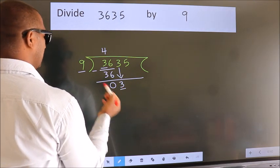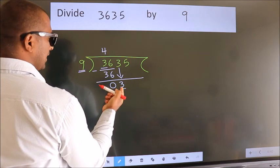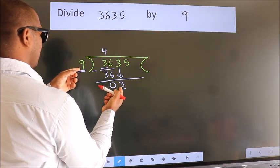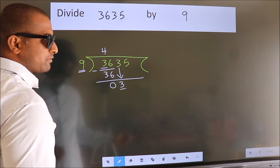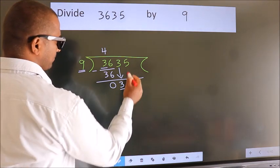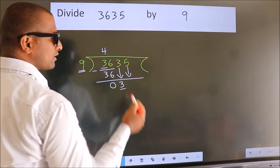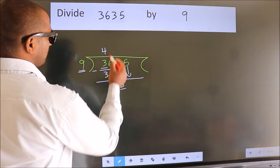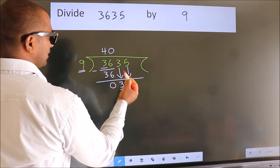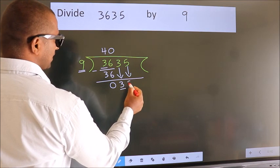Here we have 3. Here 9. 3 smaller than 9. So we should bring down the second number. And the rule to bring down second number is put 0 here. Then only we can bring down this number.